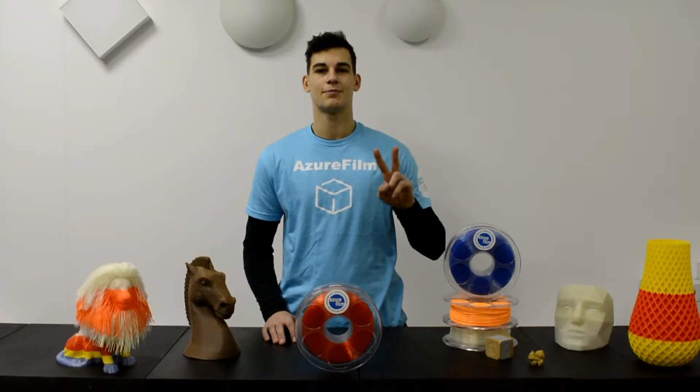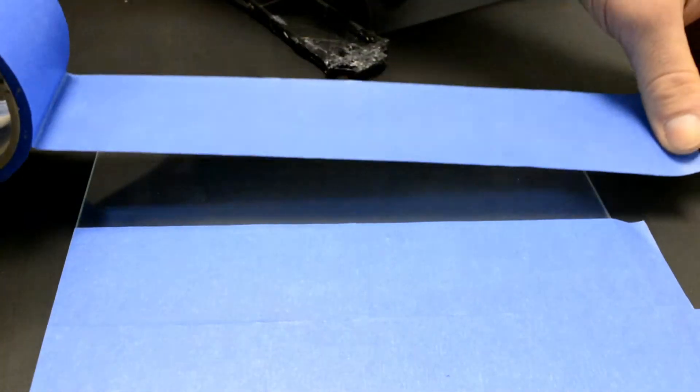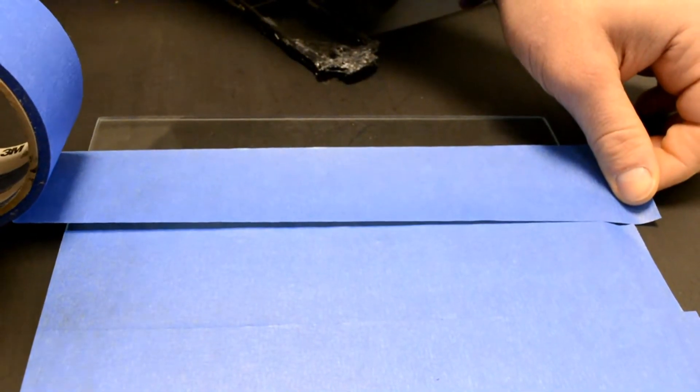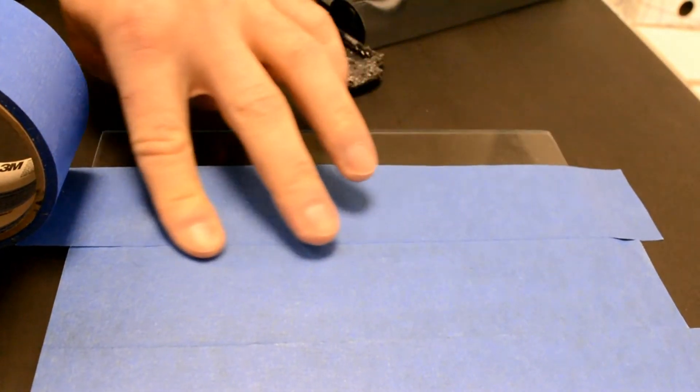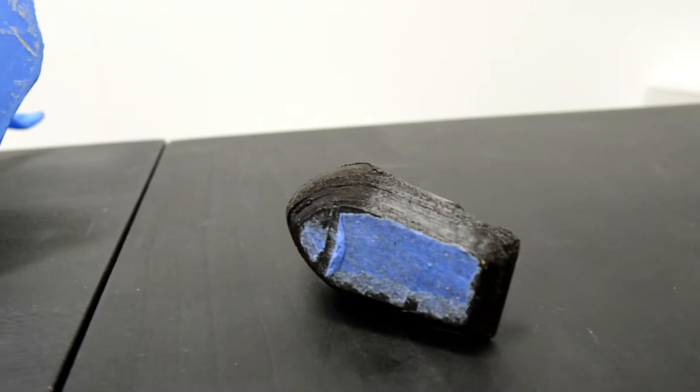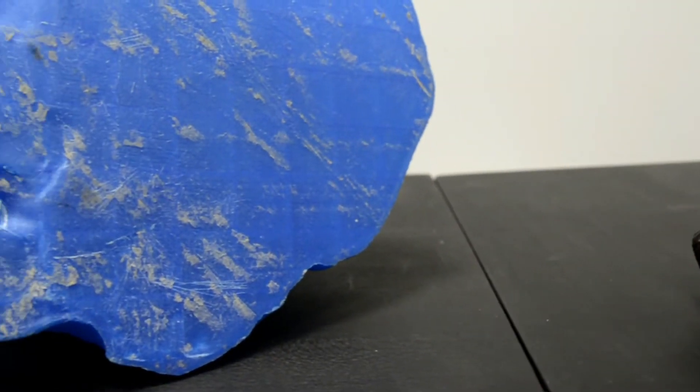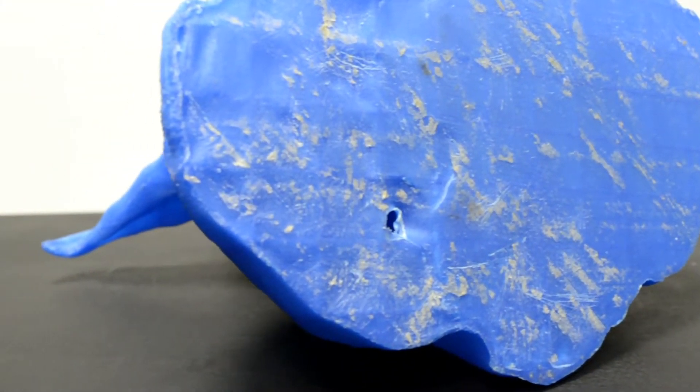Tip number 2 is bed adhesion and print bed surfaces. I use blue tape which you just simply put on the bed and make sure you don't put them over each other or too far apart. Any of this will affect your print. The thing I don't like about this tape is that it leaves a distinct pattern on the bottom of your print.